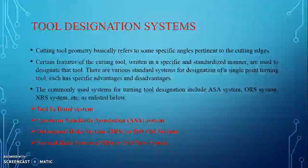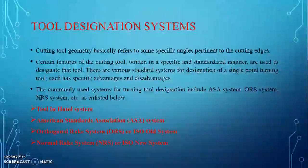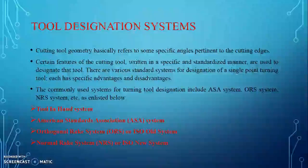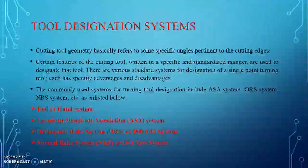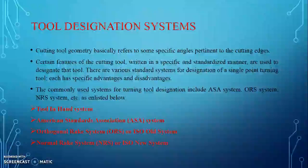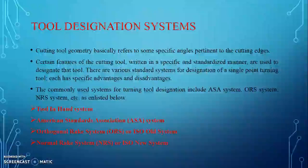This geometry is written in a specific and standardized manner, and this work has been carried out by different organizations: the American Standards Association system (also called the Machine Reference System or ASC system), the second Orthogonal Reference System (ORS system), and the third Normal Reference System (NRS system).